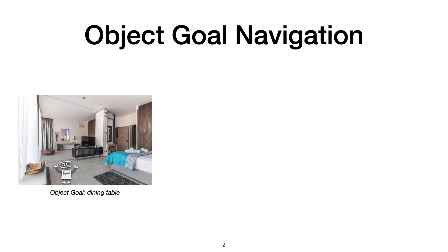In the object goal navigation task, the agent starts at a random location in the environment and is asked to navigate to an object belonging to a particular category, such as a dining table.